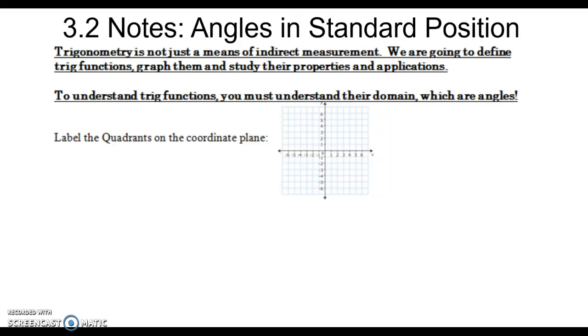Today's lesson is over angles in standard position. We're focusing on angles because to understand trig functions, you must understand their domain, which are angles. For instance, sine of an angle equals opposite over hypotenuse. The domain or input values is an angle, and the output values of trig is a ratio.